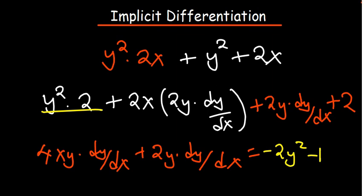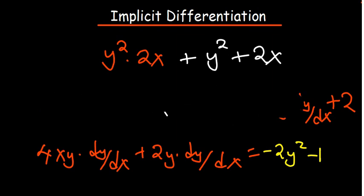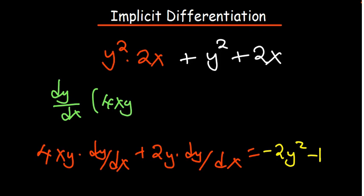Okay. So, at the point where we've reached now, all we can just do is the same procedure. Just factorize the dy/dx, right? On the left-hand side. So, we have dy/dx, what remains with 4xy for the first part, and the other part will remain with 2y. On the other side, we have negative 2y squared minus 2.